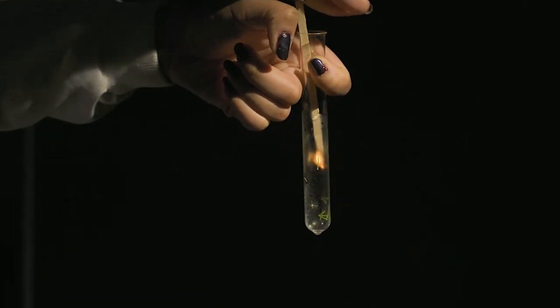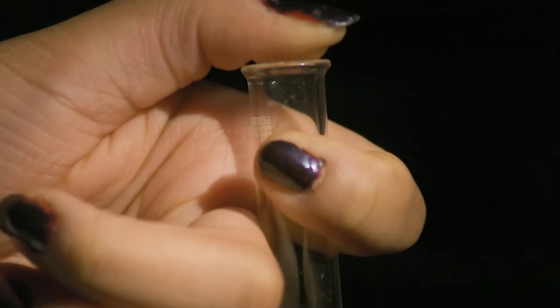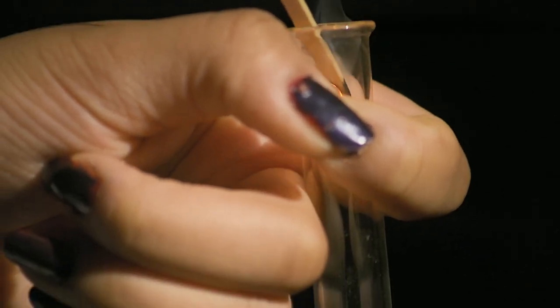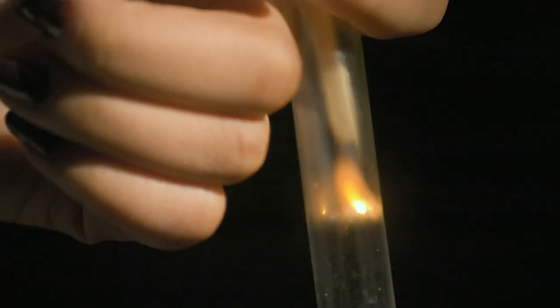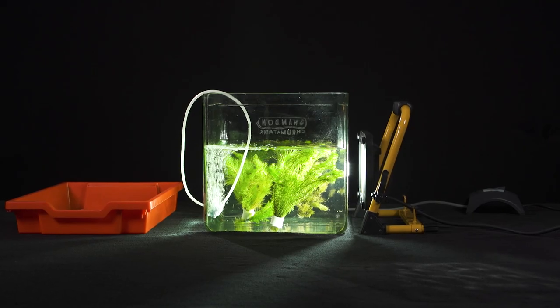There are a few things that can really make a difference to ensuring that this practical is successful for all the students in the class. Pondweed is a living organism which responds to its environment. So it's important that the pondweed is kept in conditions that mean it's photosynthesizing readily before as well as during the practical.